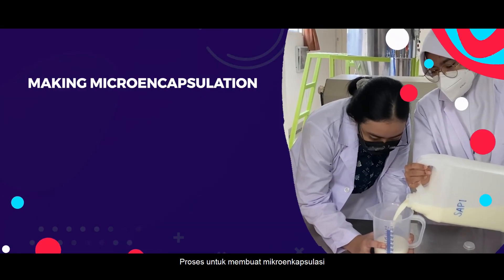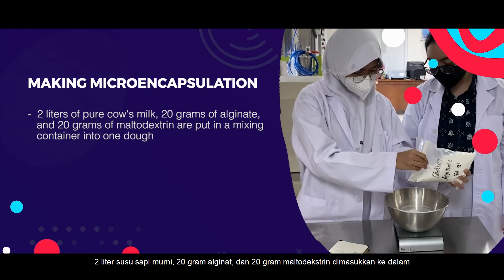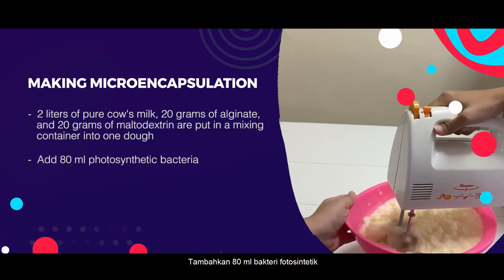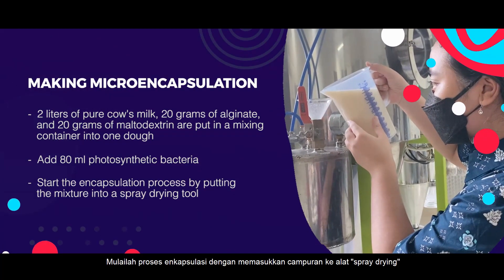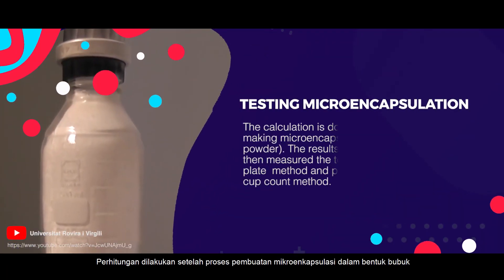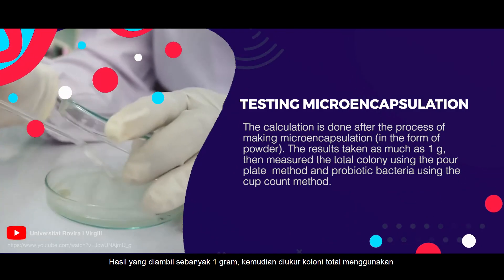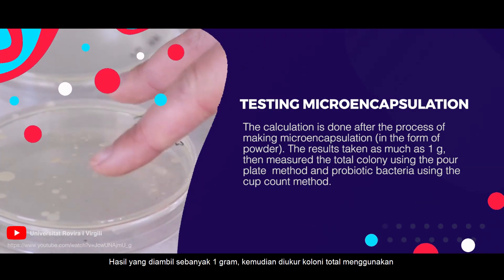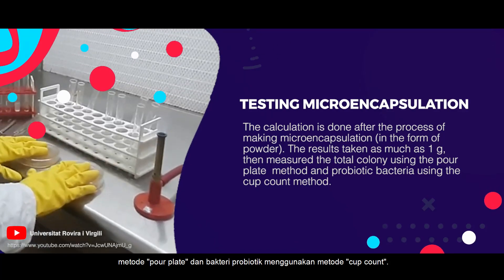We used several tools and materials. The research was conducted through three stages. In the process of making microencapsulation, two liters of pure cow's milk, 20 grams of alginate, and 20 grams of maltodextrin are put in a mixing container. Then 80 milliliters of photosynthetic bacteria is added. The encapsulation process begins by putting the mixture into the spray drying tool. After the process, the resulting powder is taken as one gram.